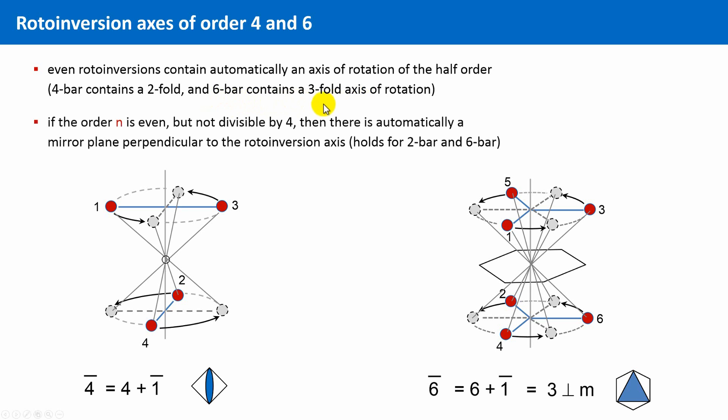And secondly, if the order of the rotoinversion axis is even and not divisible by 4, then there is automatically a mirror plane perpendicular to this axis. As we only consider crystallographic rotoinversions, this principle holds for 2 bar and 6 bar.